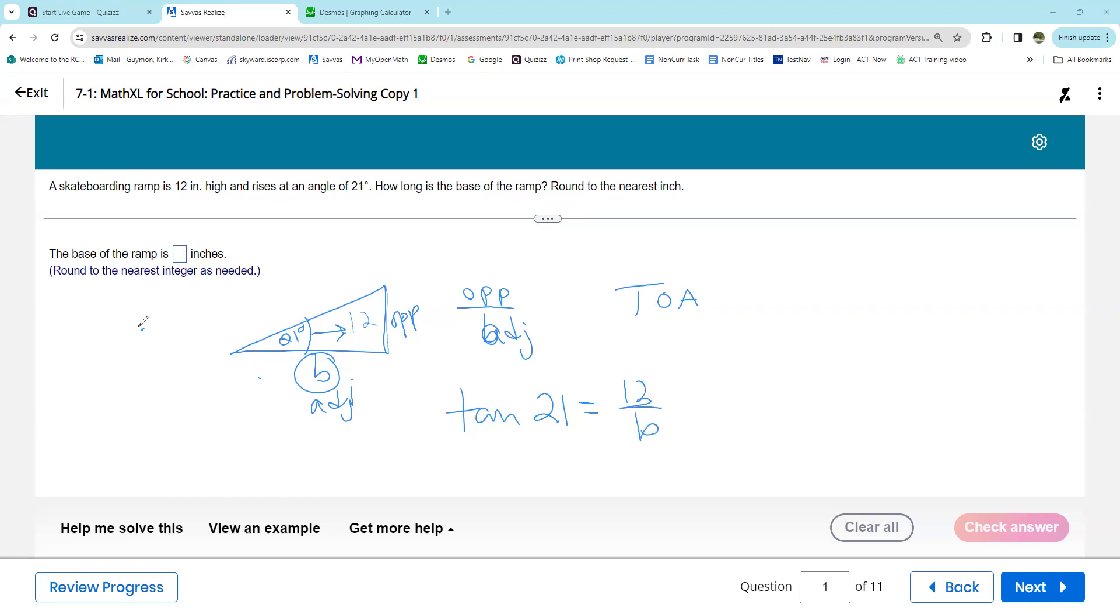So let's just go and get that out of there. We'll multiply by B on both sides. Multiplying by this B undoes that dividing by B, and then after we do that we want B to be alone. Now I'm going to do this all at once just to save time. Divide by the tangent of 21, and so B will be 12 divided by the tangent of 21.